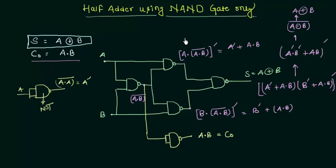So this is how we realize a half adder using only the NAND gate. In the next presentation we will find out how the half adder is realized using only the NOR gate. See you in the next one.